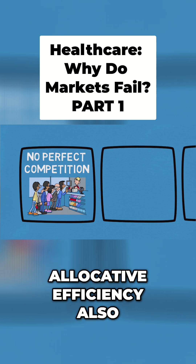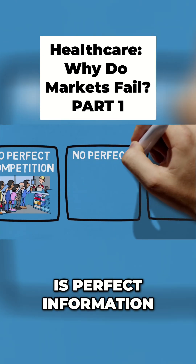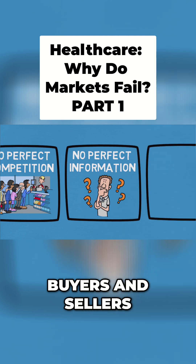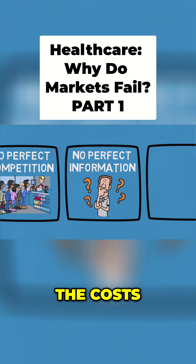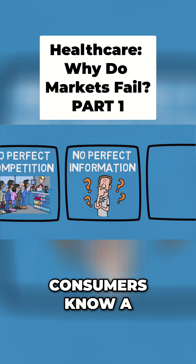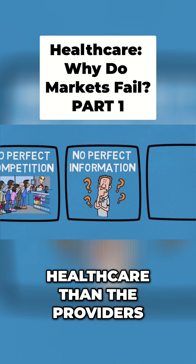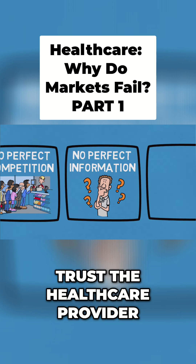Secondly, allocative efficiency also assumes that there is perfect information. This means that buyers and sellers know everything about the products — the costs, the benefits, the alternatives, etc. In healthcare, consumers know a lot less about healthcare than the providers. In fact, the consumers and the patients usually trust the healthcare provider.